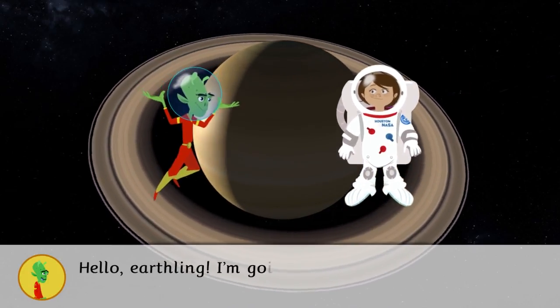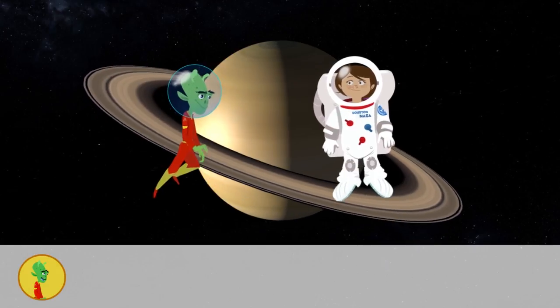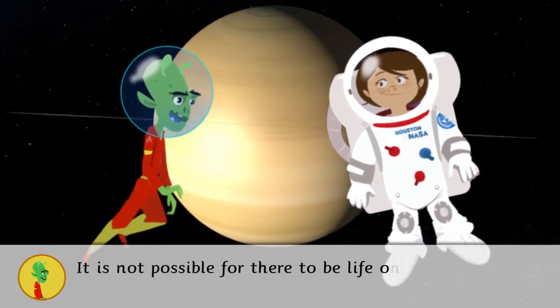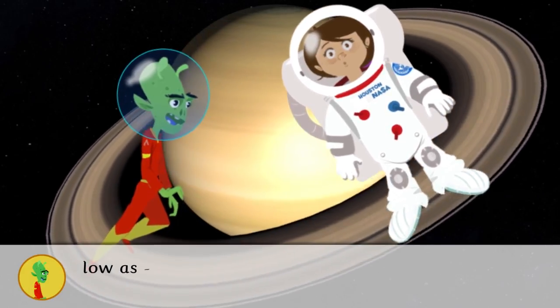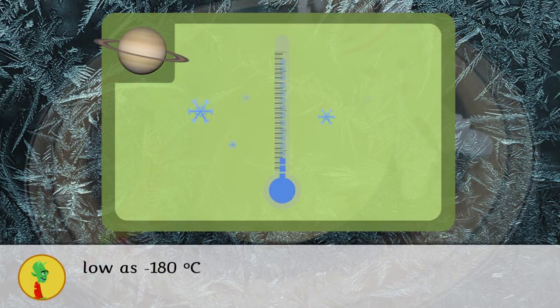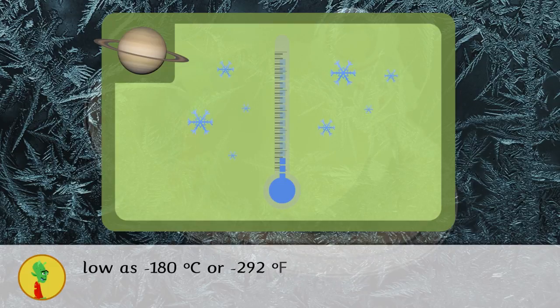Hello Earthling! I am going to tell you some interesting things about the planet. It is not possible for there to be life on Saturn because the temperature is very low. It can get as low as minus 180 degrees Celsius or minus 292 Fahrenheit.